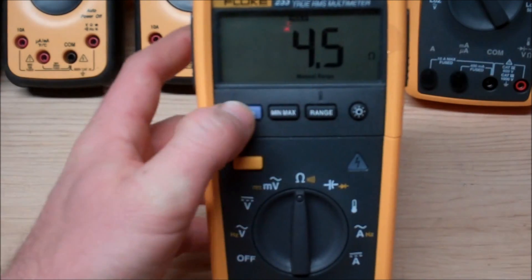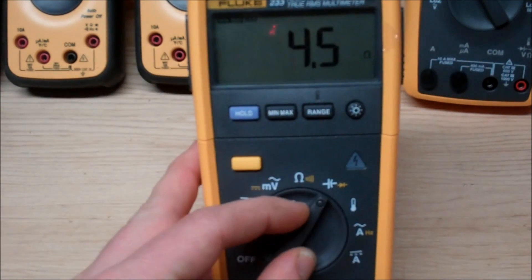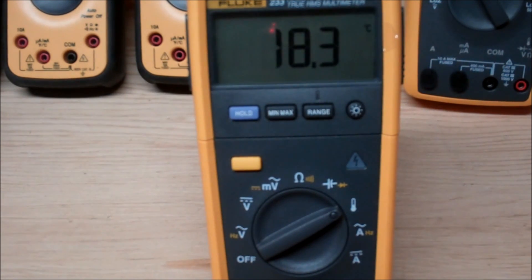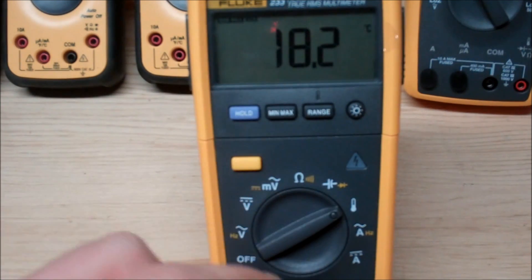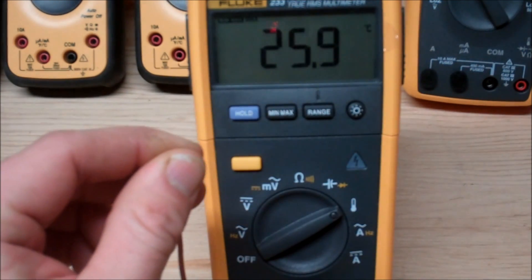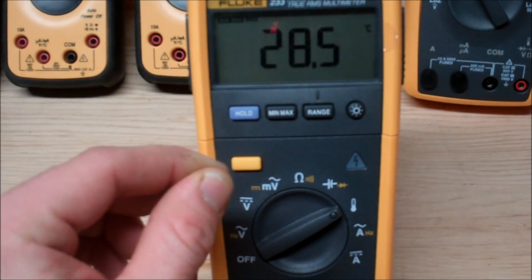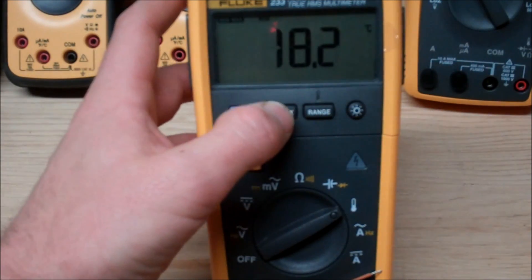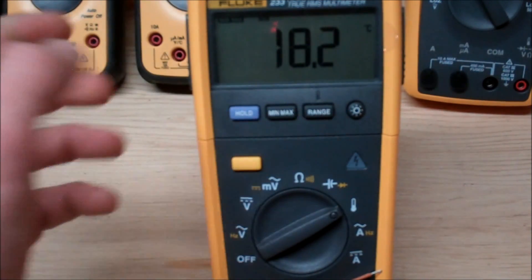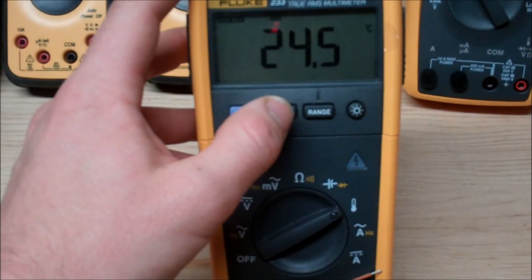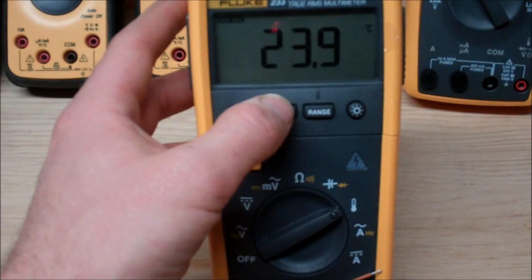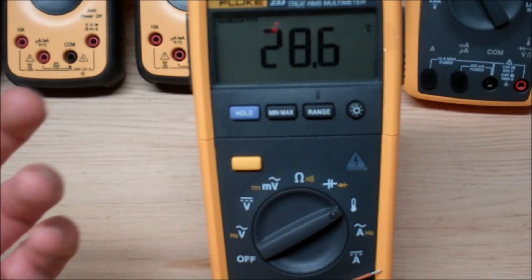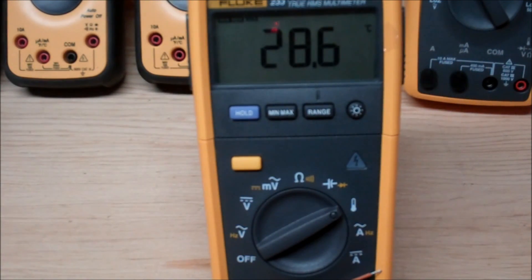The next feature it actually has is your min and max. So if we toggle this over to temperature it's actually going to be displaying what the temperature is when it's at its max and high. So if I just heat up this thermocouple here you can see that it's spiking up. Now if we go through the functions, the minimum that we measured was 18.2, the average is 24.5 and our current is 24 point, well in this case it's gradually going down, and our maximum is 28.6. Very useful function.